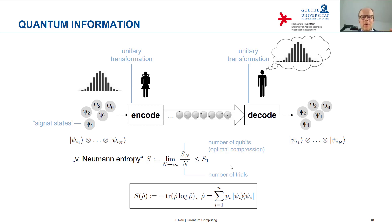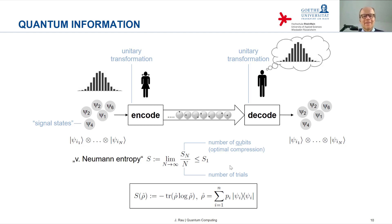There are many formal similarities with the Shannon entropy, but bear in mind that the physical meaning is very different. Here we have quantum states we want to transmit via a quantum channel using qubits; in the classical case we had a classical random experiment transmitted using classical bits. It is striking, however, that the entropy formula obtained is formally so similar to the classical case.